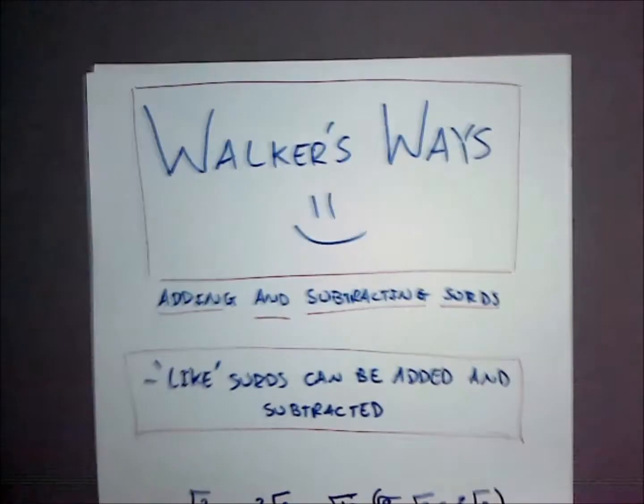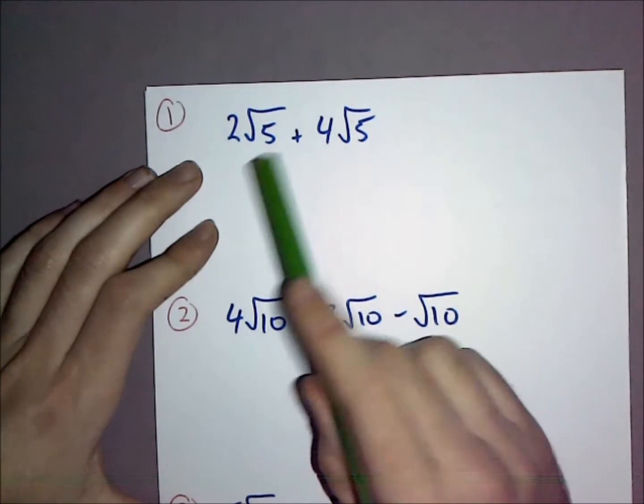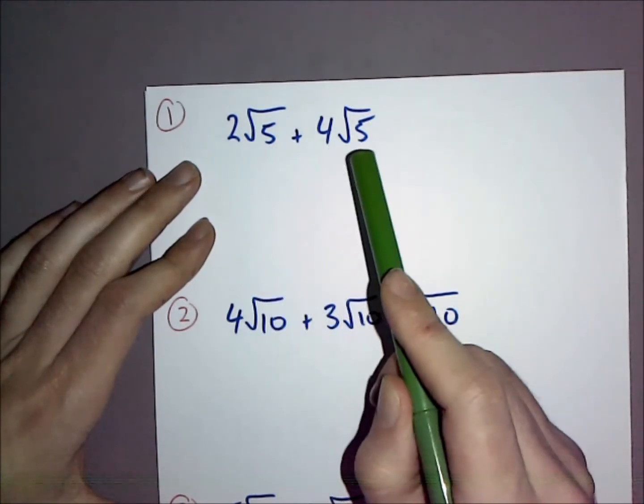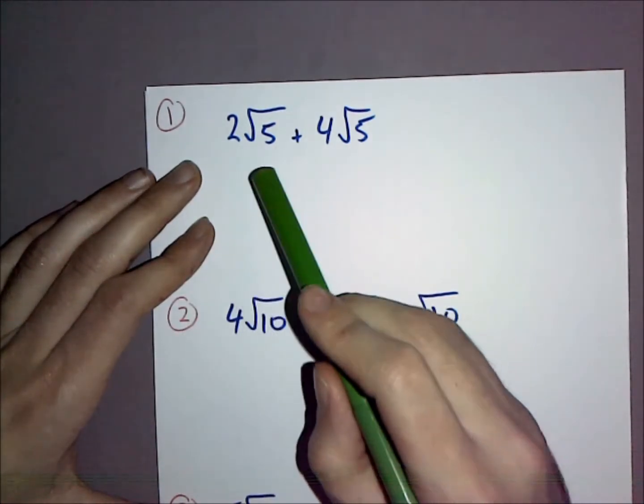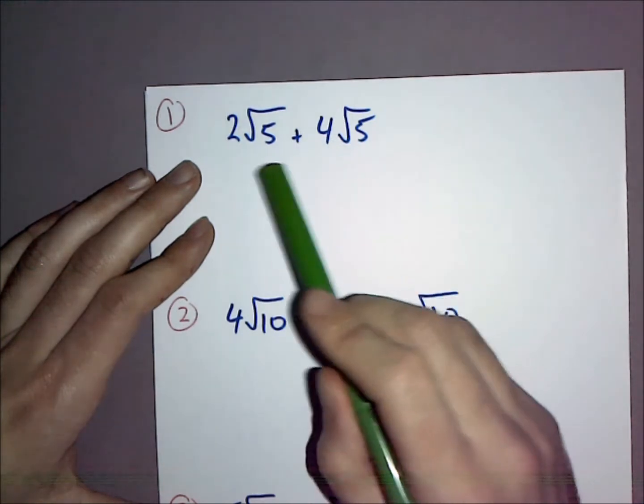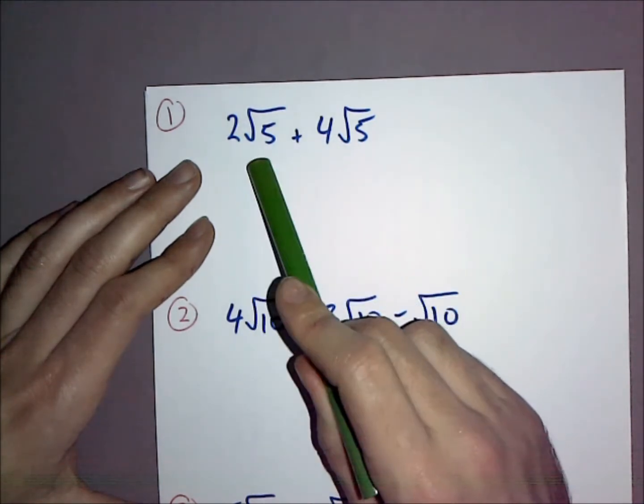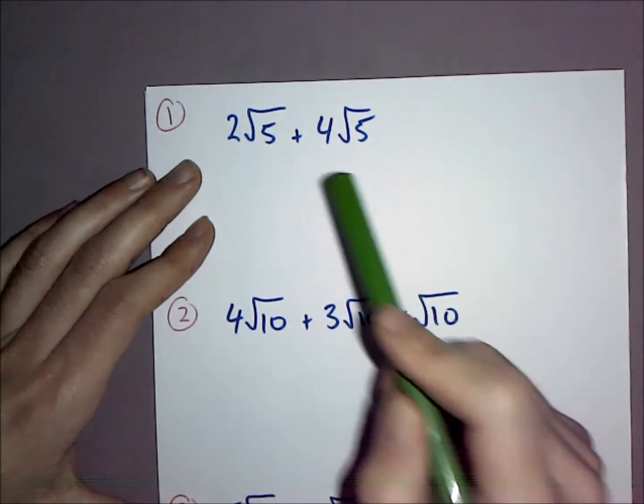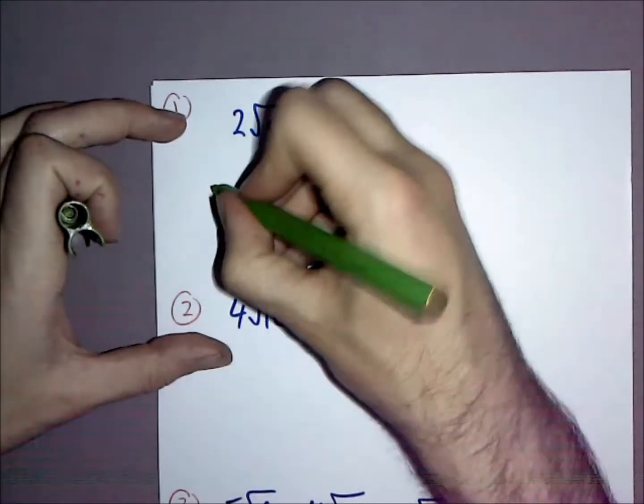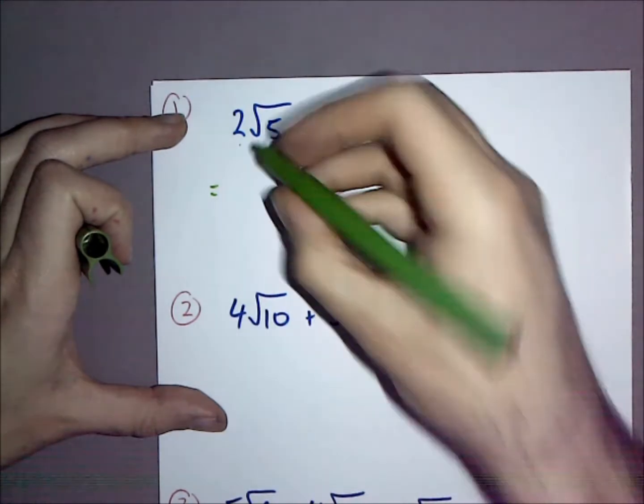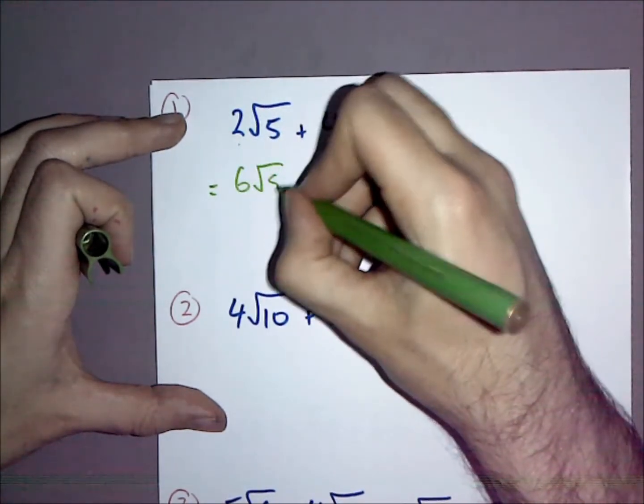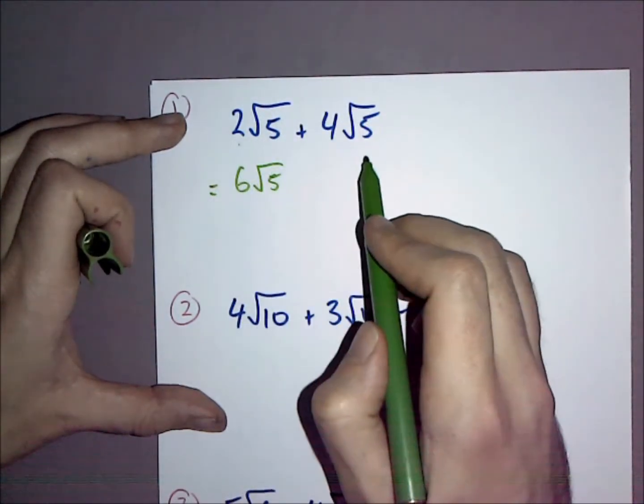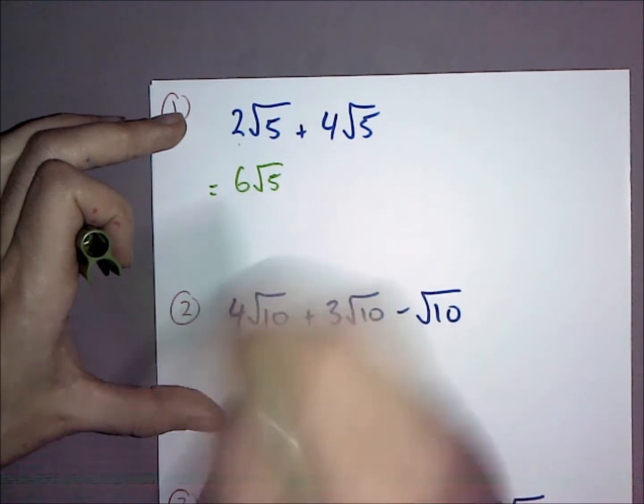First example: 2√5 + 4√5. When I'm doing this I normally think of these square roots just like variables, so I pretend this is like 2x + 4x. If you're doing that you get 6x, much the same. It's going to be 2 + 4 = 6 and we're left with the √5. So 2√5 + 4√5 = 6√5.